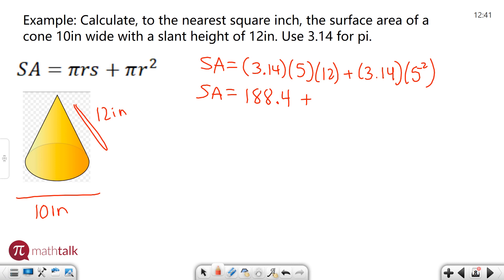And then you can go ahead and add 3.14 times 5 squared. Again, I recommend typing that on a calculator. 5 squared is 25, and 3.14 times 25 is going to get you 78.5. Then you can go ahead and continue on to add these up.